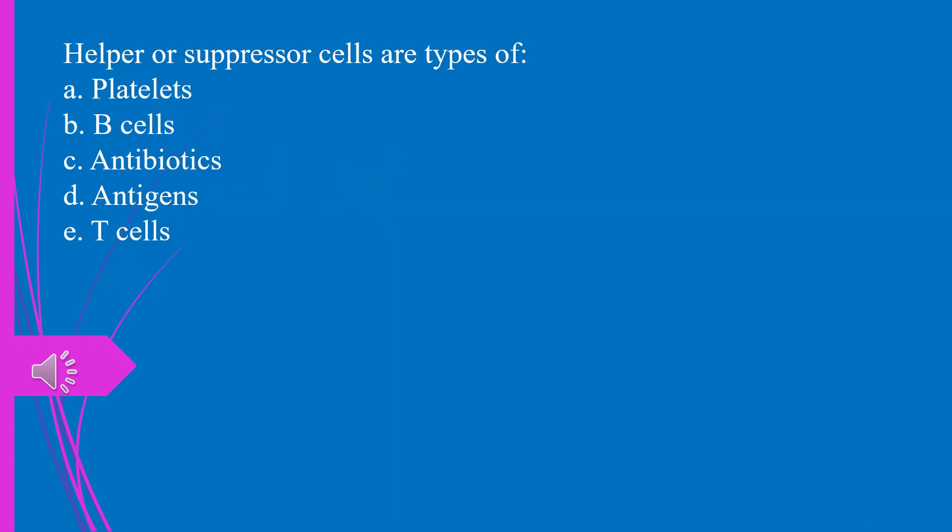Helper or suppressor cells are types of, A. Platelets. B. B-cells. C. Antibiotics. D. Antigens. E. T-cells. The answer is E. T-cells.